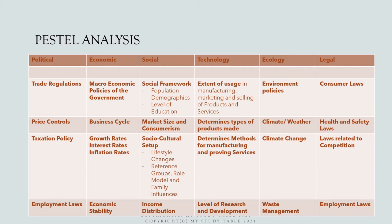The business environment is divided into six related subsystems: political, economic, social, technology, ecology or environmental, and legal environment. Let's go through each of these factors to understand how they affect or influence the operations of a business and how businesses make strategies according to the dynamic environment in which they operate. Beginning with political.